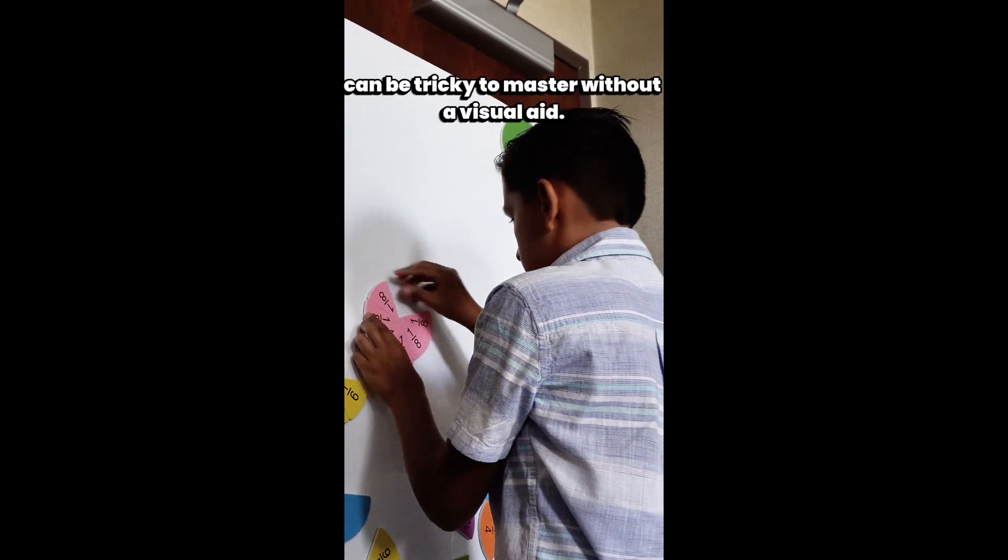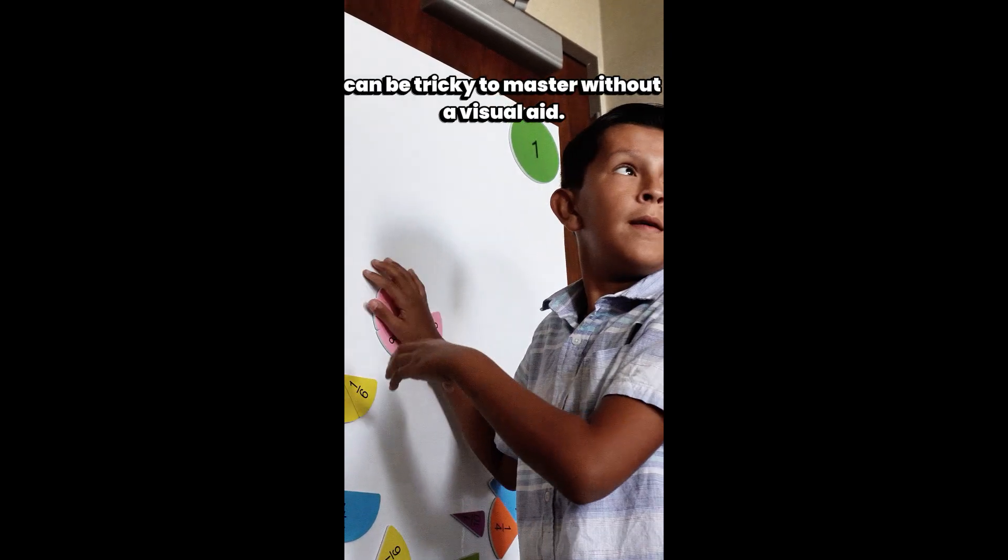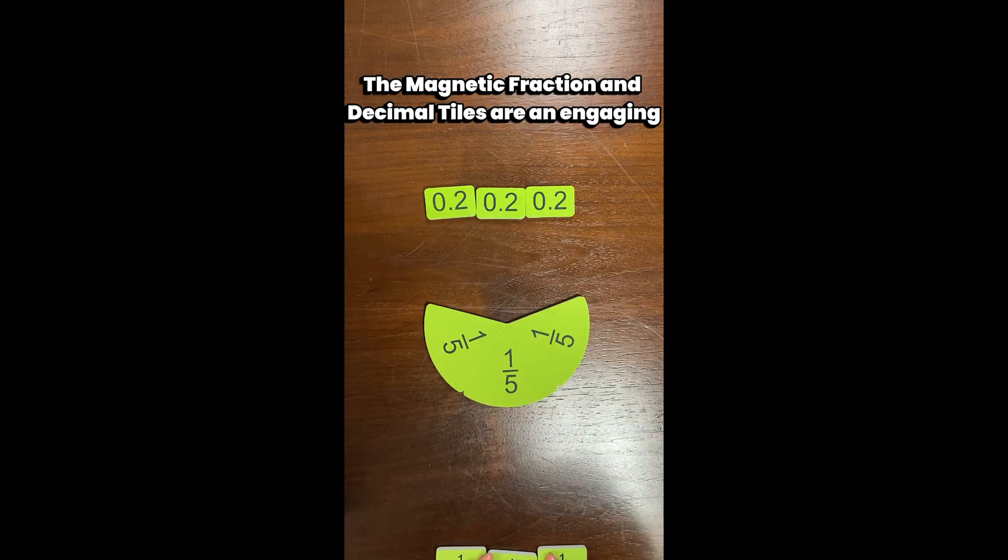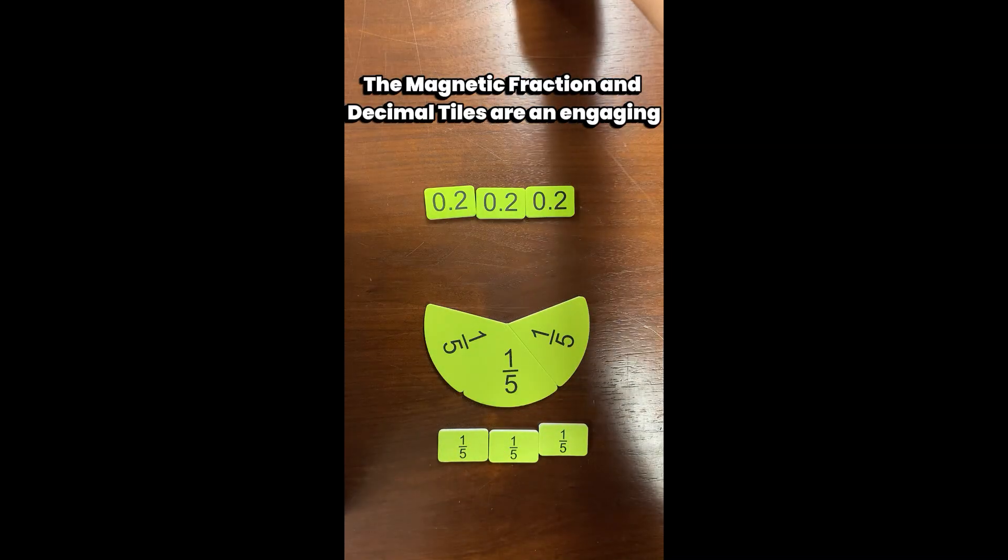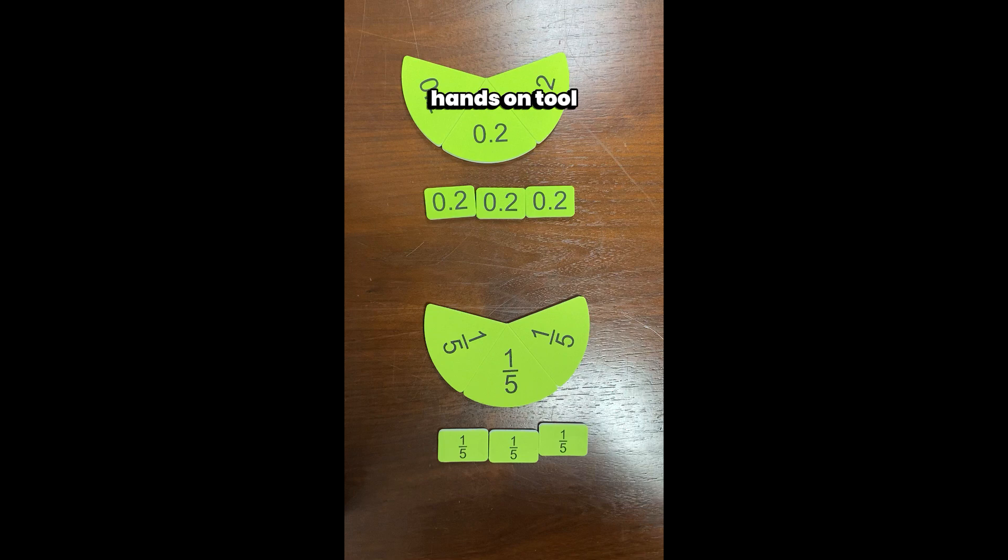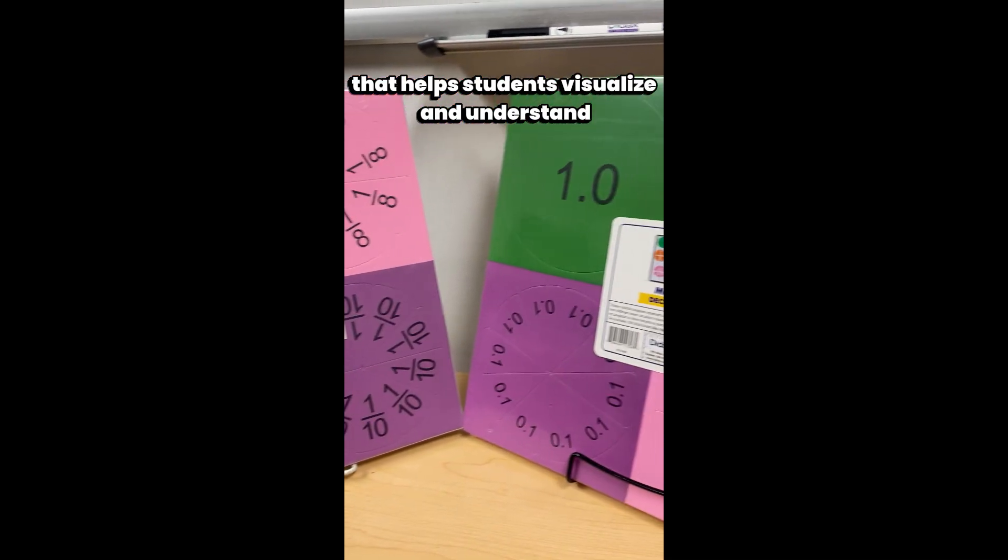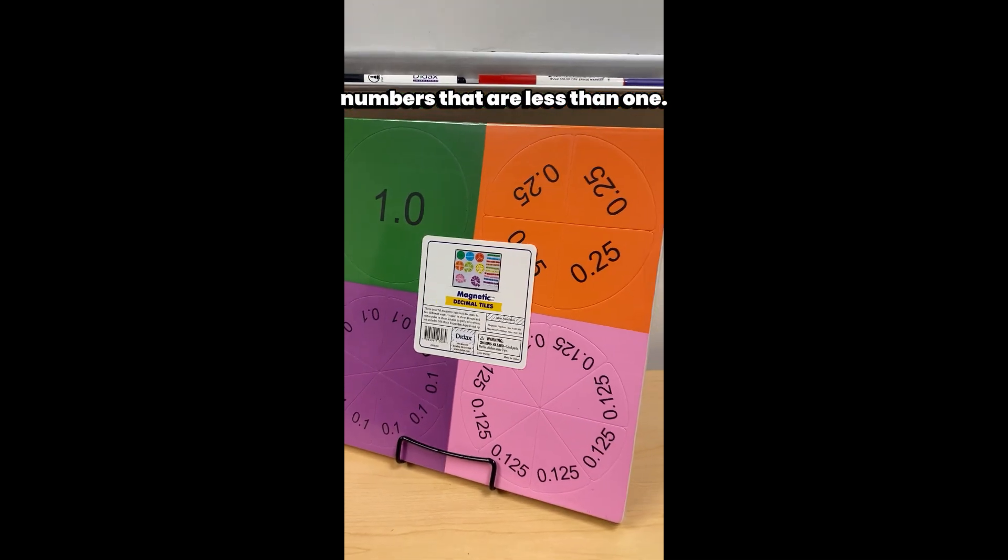Part-whole relationships can be tricky to master without a visual aid. The magnetic fraction and decimal tiles are an engaging hands-on tool that helps students visualize and understand numbers that are less than one.